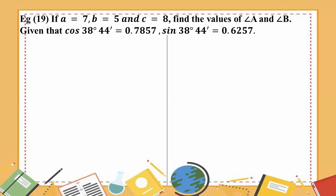If a equals 7, b equals 5, and c equals 8, find the values of angles a and b.